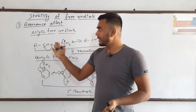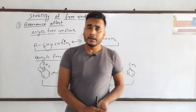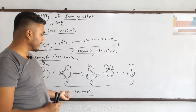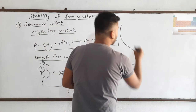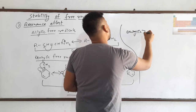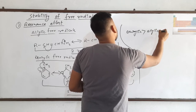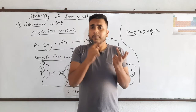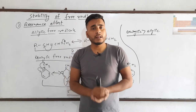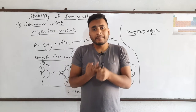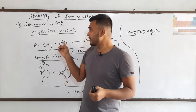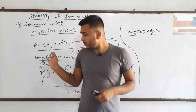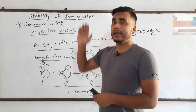Now, can you tell which — allylic or benzylic — is more stable? Because benzylic has more resonating structures, benzylic free radicals are more stable than allylic ones. And among simple, allylic, and benzylic free radicals, allylic and benzylic are more stable than simple free radicals, because the electron gets delocalized by the pi electron cloud. Among them, benzylic free radicals are the most stable due to the resonance effect.